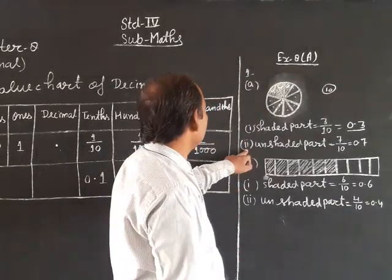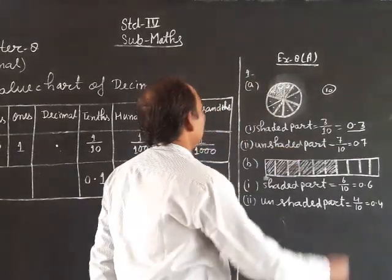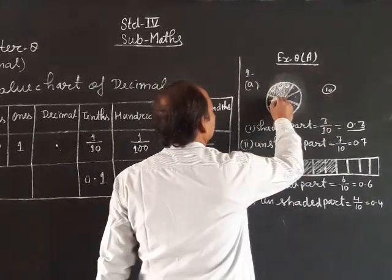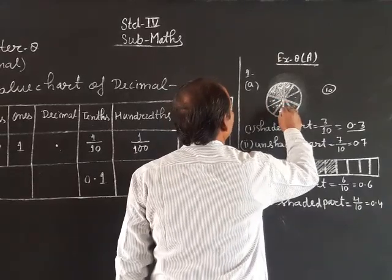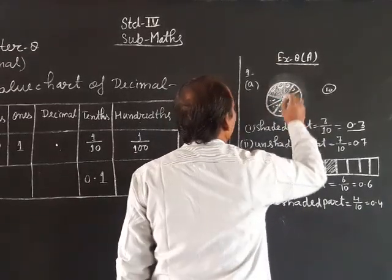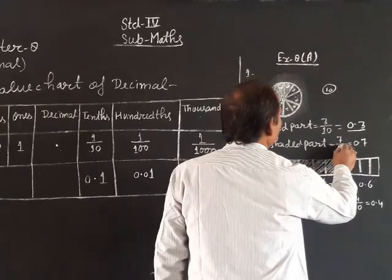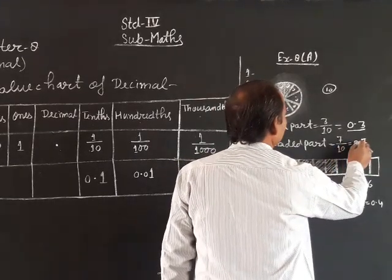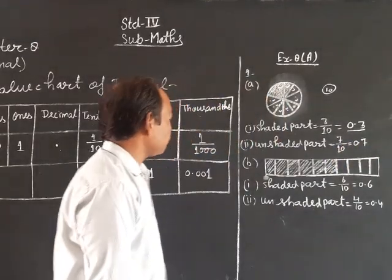Part number 2, unshaded part. Unshaded parts: 1, 2, 3, 4, 5, 6, 7, 8, 9, 10 — unshaded count is 7, means 0.7.